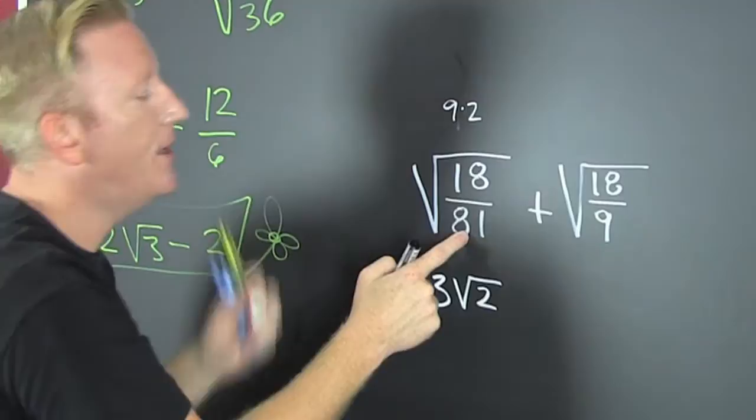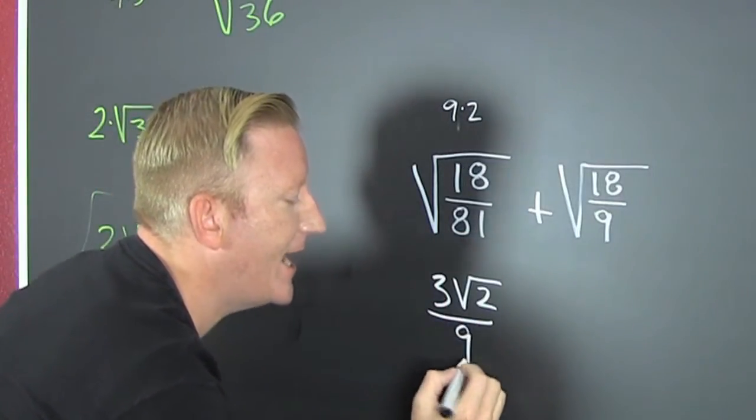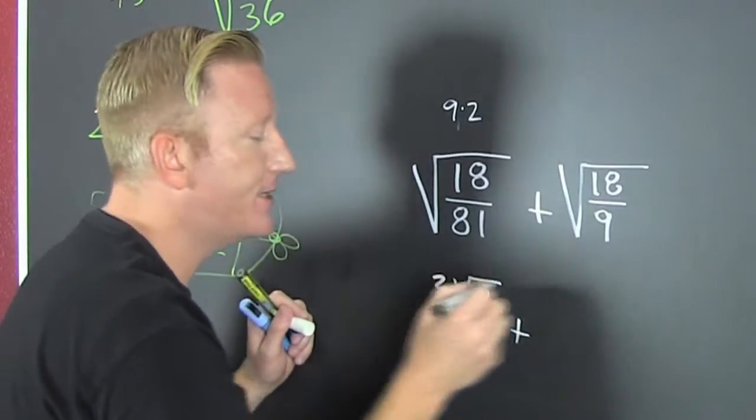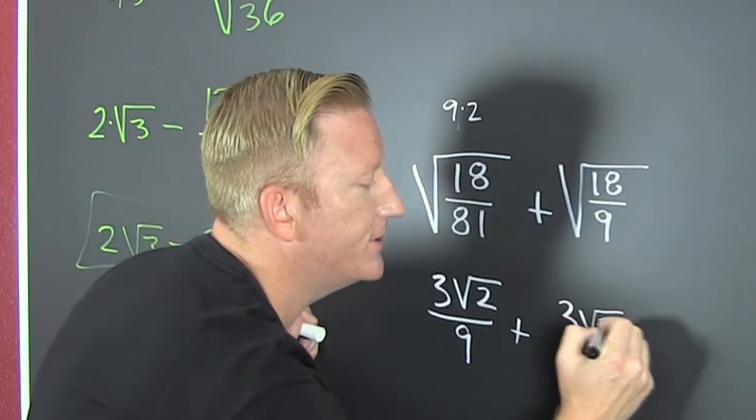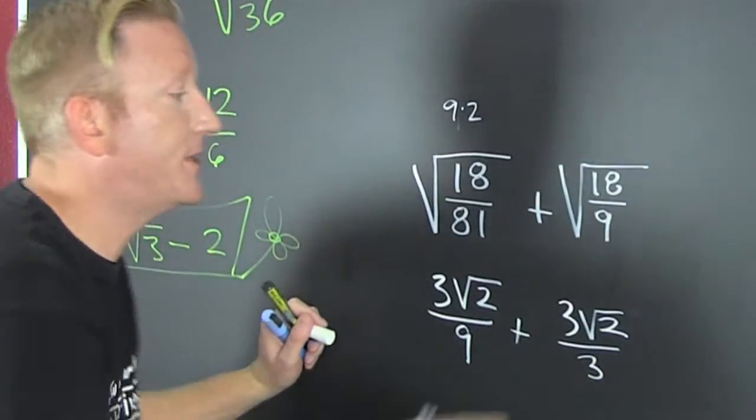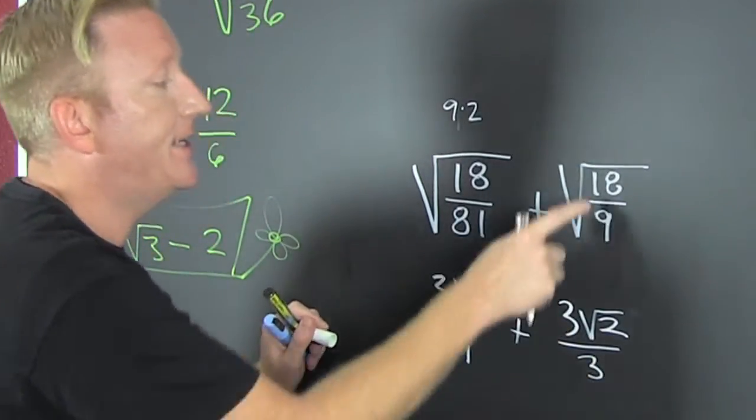And 9 times 9 is 81, so that's over 9. I guess I could reduce but I'll do that in a moment. This one over here is 3√2 and that's over 3.